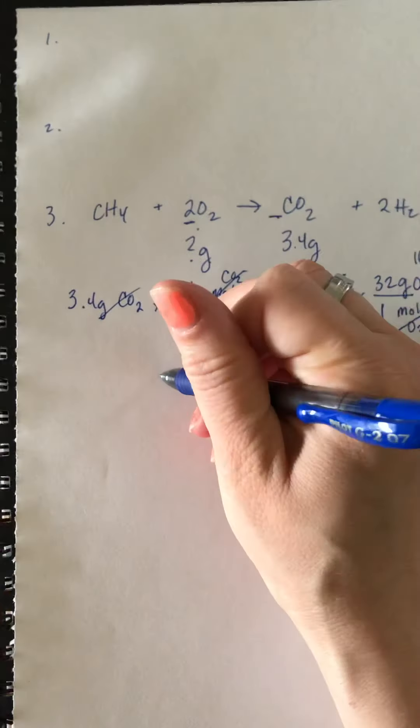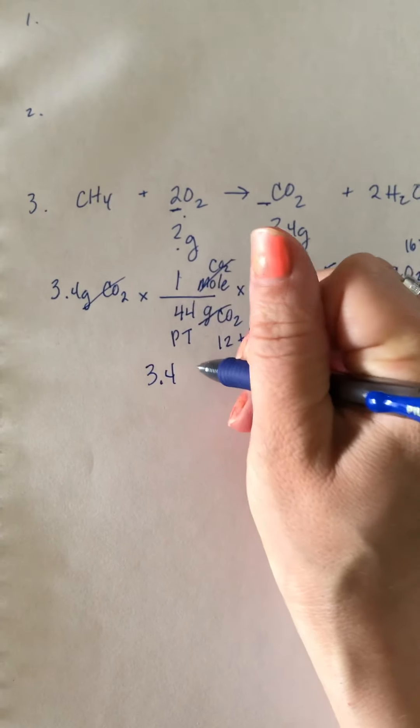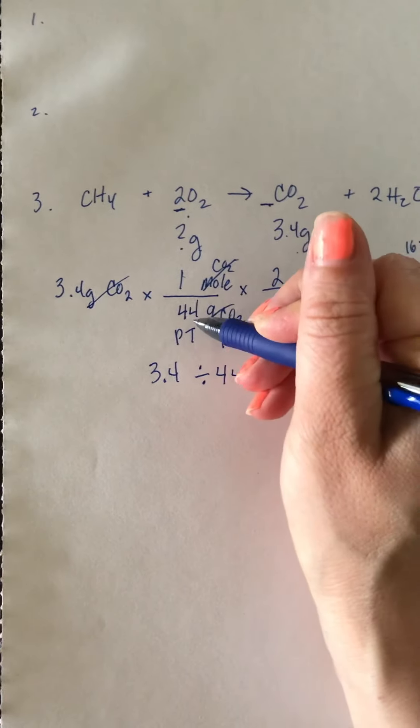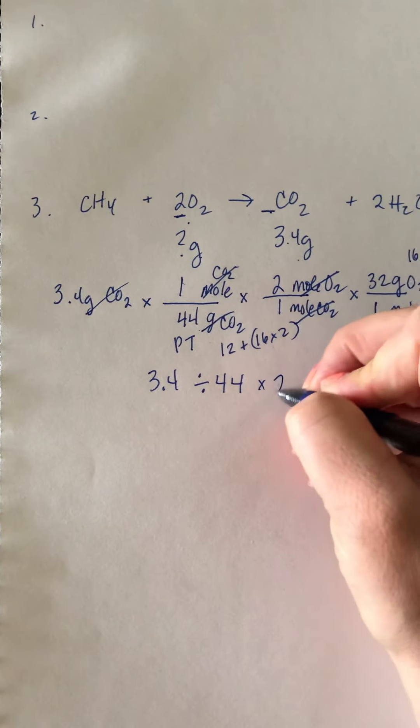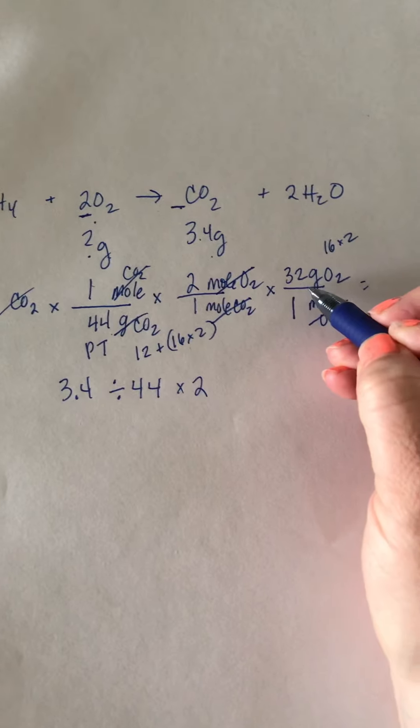You're going to take 3.4 divided by 44 because it's on the bottom here, then multiply by 2 because 2 is on top, you kind of just ignore ones, and then you multiply by 32, and then there's your answer, grams of oxygen.